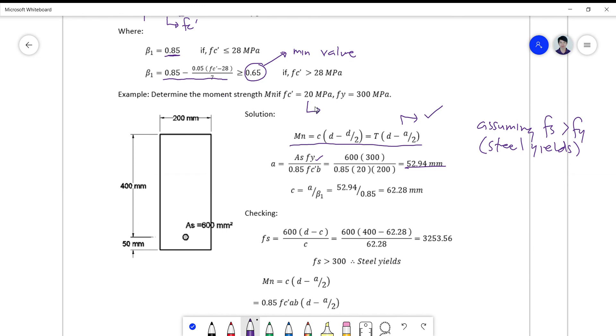Or else you cannot use this formula because there will be two unknowns. You have to assume that this is fy and then solve for a and then back compute your c. c is a over beta 1. What is beta 1? 0.85, because this is 20 megapascal. Remember, if fc prime is less than 28, automatic it's 0.85. So you get 62.28 millimeter. And checking fs if it yields or not, you just plug it to the formula we have derived. So this becomes 600, and then 400 minus 62.28, that's your c, divided by c is equal to 3253, which is greater than 300, so the assumption is correct.